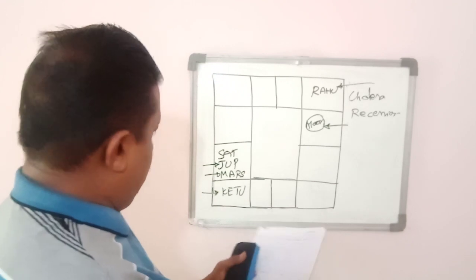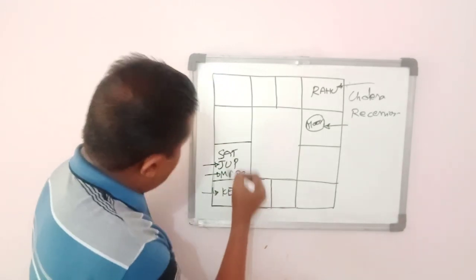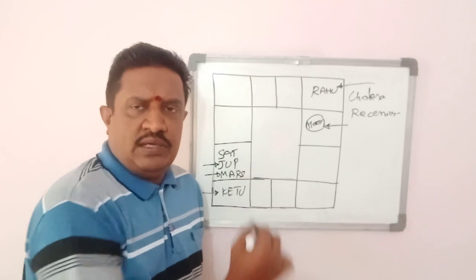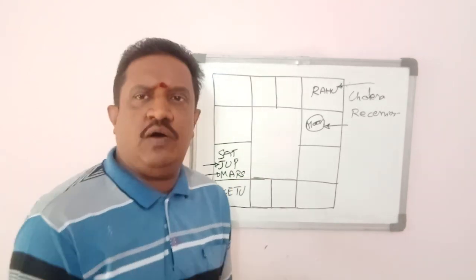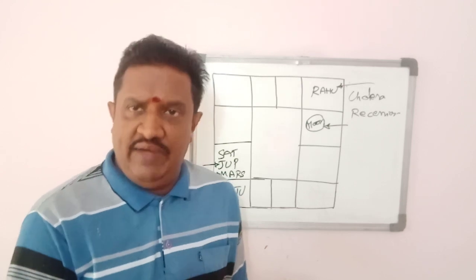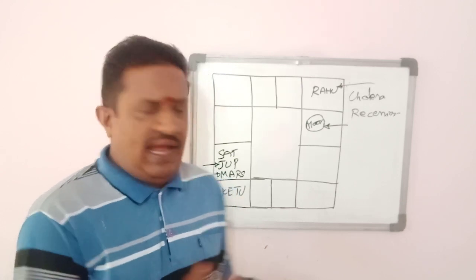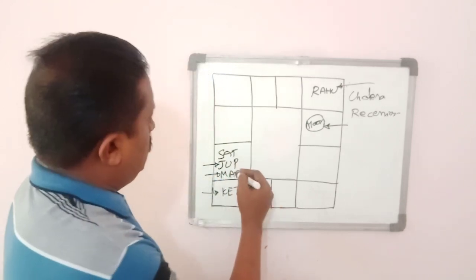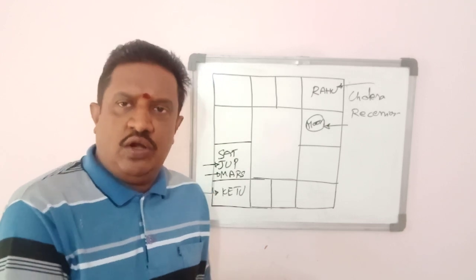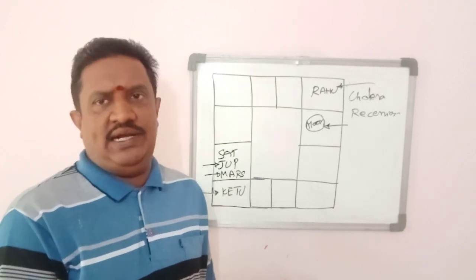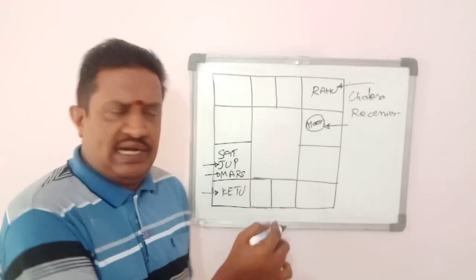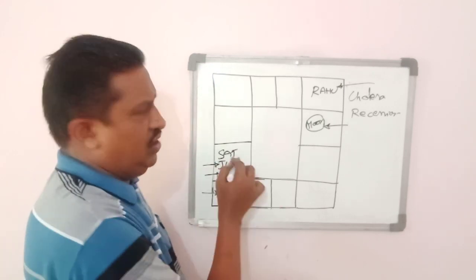As long as Saturn traverses Uttarashara Nakshatra, this panic of the coronavirus will be prevailing. When he moves into Sravana Nakshatra, whose lord is Moon — Moon is inimical to Saturn — and the lord of Uttarashara is Sun, who is also inimical to Saturn.